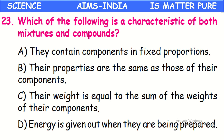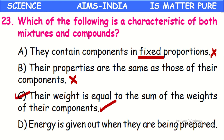Which of the following is a characteristic of both mixtures and compounds? Compounds contain components in a fixed proportion, but mixtures do not. The property that their properties are the same as those of their components is true for mixtures but not for compounds, as new compounds have different properties. However, the weight being equal to the sum of the weights of their components is true for both, according to the law of conservation of mass — the total mass of reactants equals total mass of products.